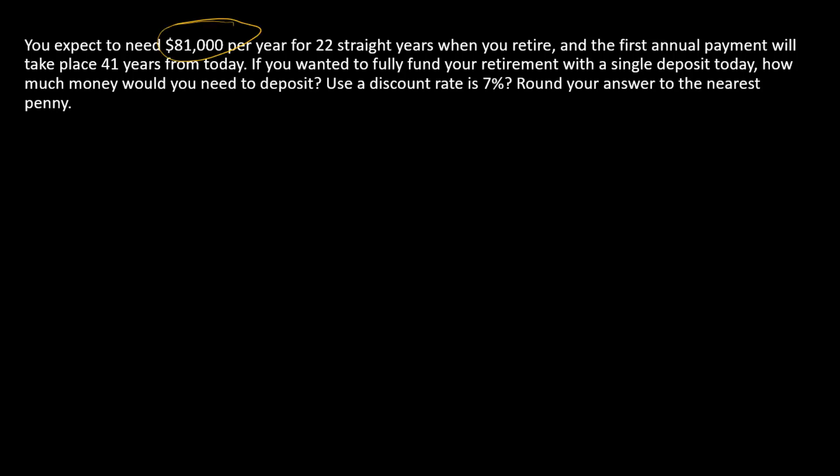It's going to be needed for 22 straight years, and the first payment's going to be needed 41 years from today. Then we're going to go forward and talk about fully funding the retirement. This is a two-step problem, but at its core we can break it down to two pretty simple annuities.